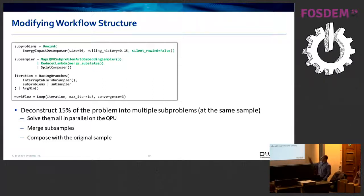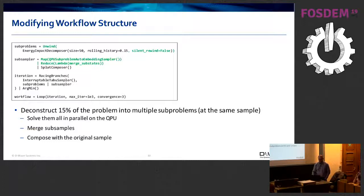We reduce the results into one and use that to generate the next state — the next sample, which might be better or not than the one we got from the taboo solver.